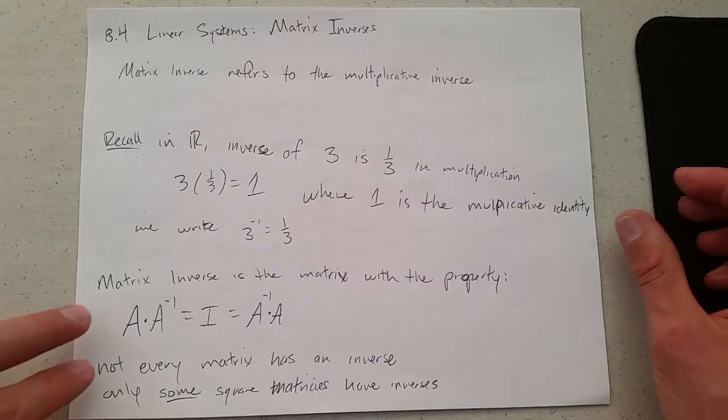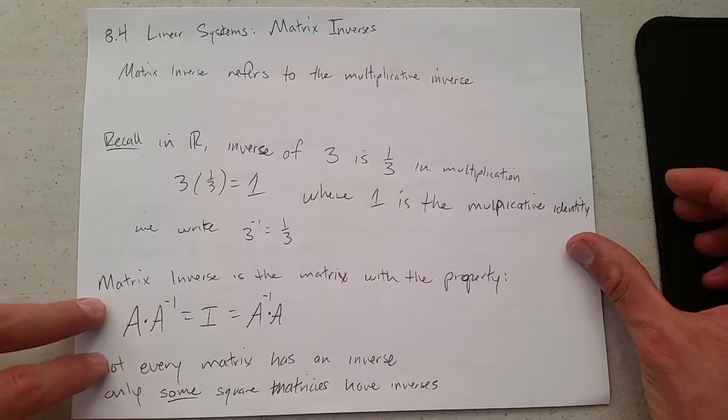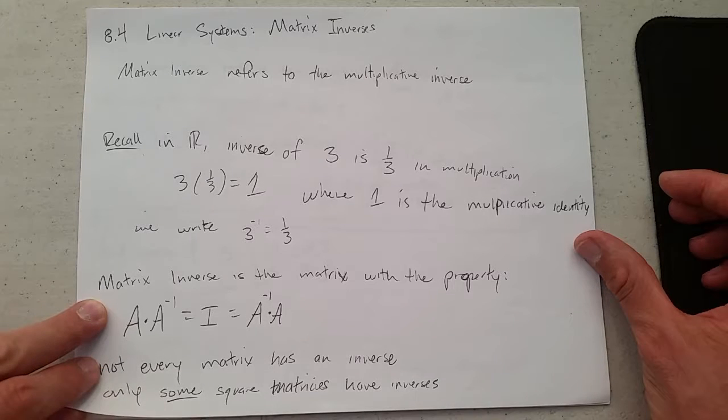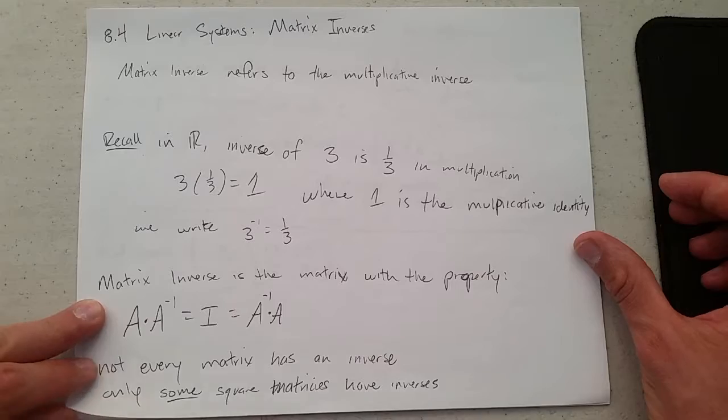That really comes down to the determinant, which is in 8.5. But I will show you another way to figure out if a matrix has an inverse or not. And if a matrix has an inverse, we call it invertible.